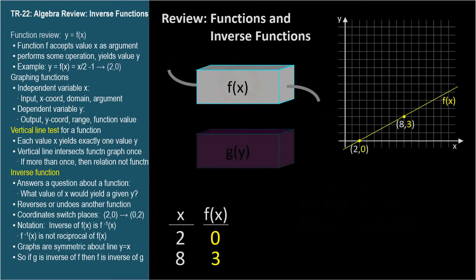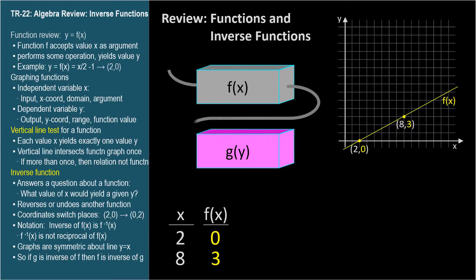Now let's think of another function, represented by this pink box. Let's take the output of the first function and pipe it into the input of the second function. Suppose the second function returns the same value that we put into the first function.